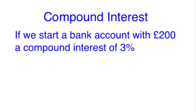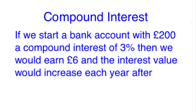Compound interest is where it gets a bit more tricky. So if we use the same example as before, we'll start the bank account with £200 again and we'll have a compound interest this time of 3%. We'll still earn £6 in the first year, however the interest value will increase every year after. This is because compound interest compounds the interest we've earned before as well as the money in the account every year.